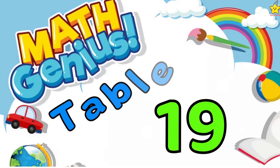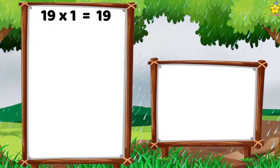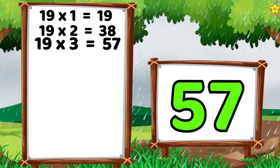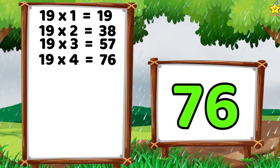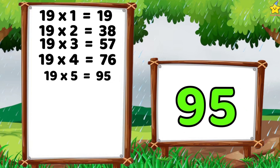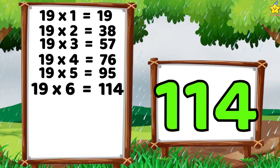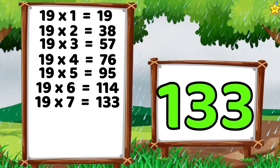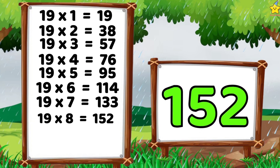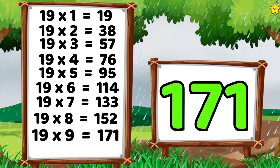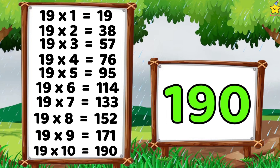Let's again. Table of 19. 19 ones are 19. 19 twos are 38. 19 threes are 57. 19 fours are 76. 19 fives are 95. 19 sixes are 114. 19 sevens are 133. 19 eights are 152. 19 nines are 171. 19 tens are 190.